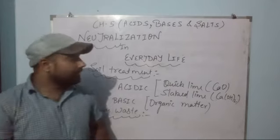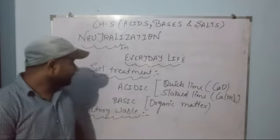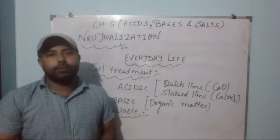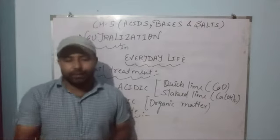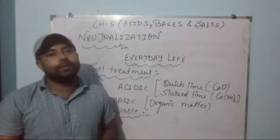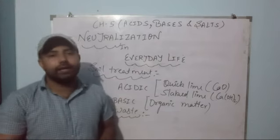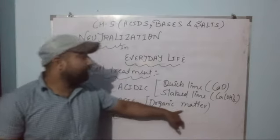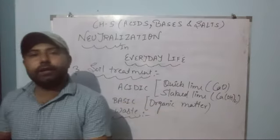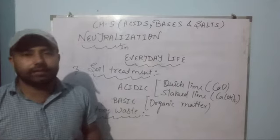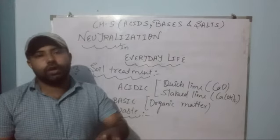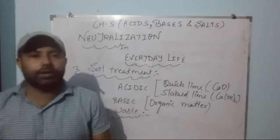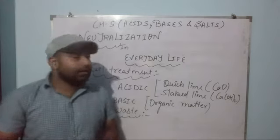If too much base has been added to the soil, its nature becomes basic. To neutralize it again, we add organic matter to the soil. That organic matter releases acids, which neutralize the effect of the base, making the soil suitable for production again.